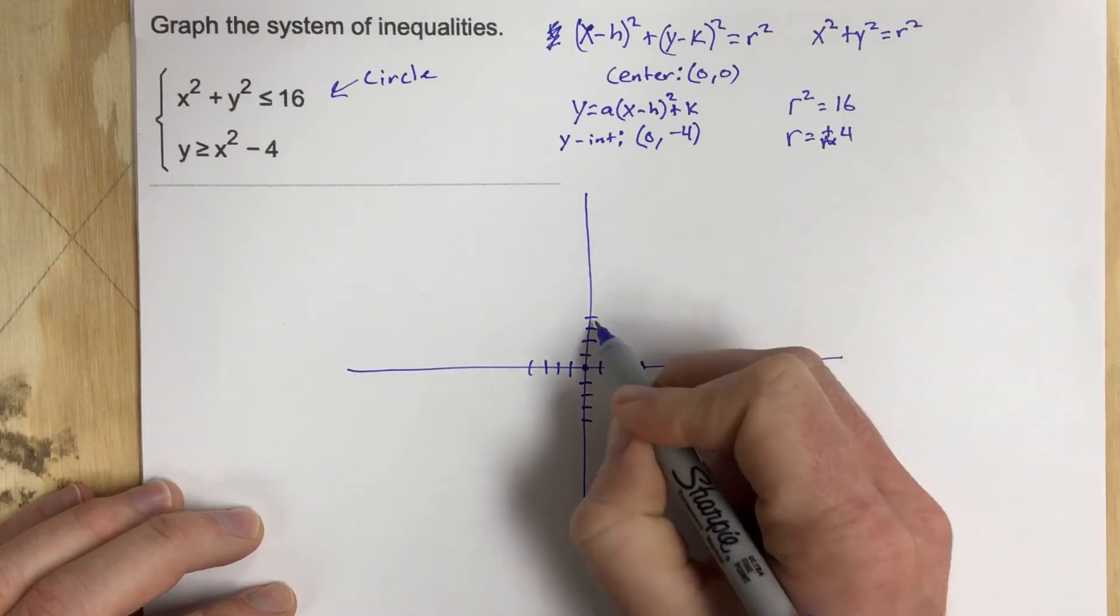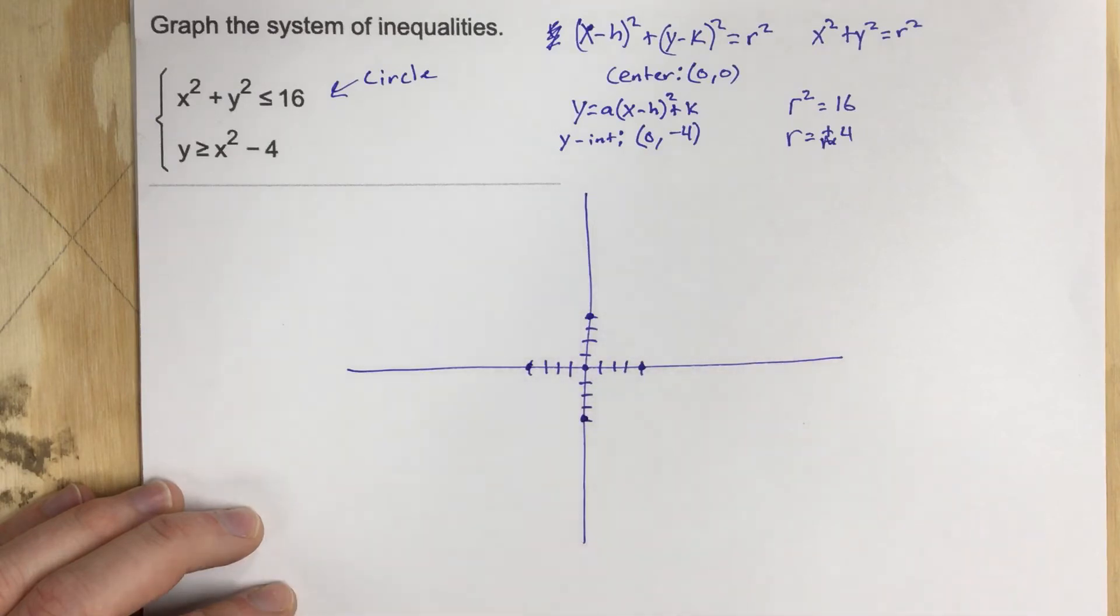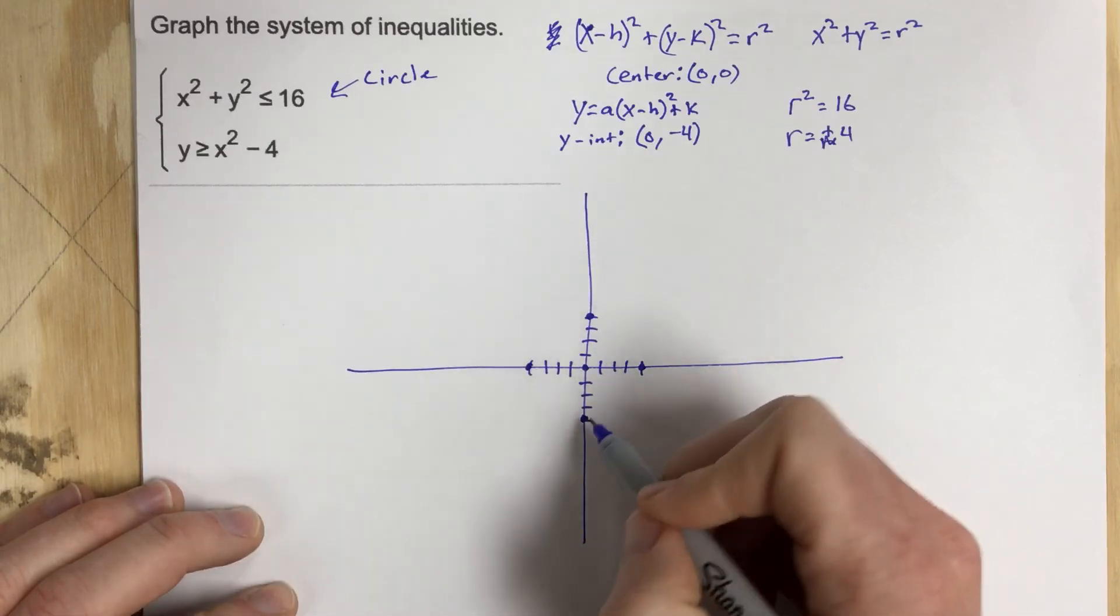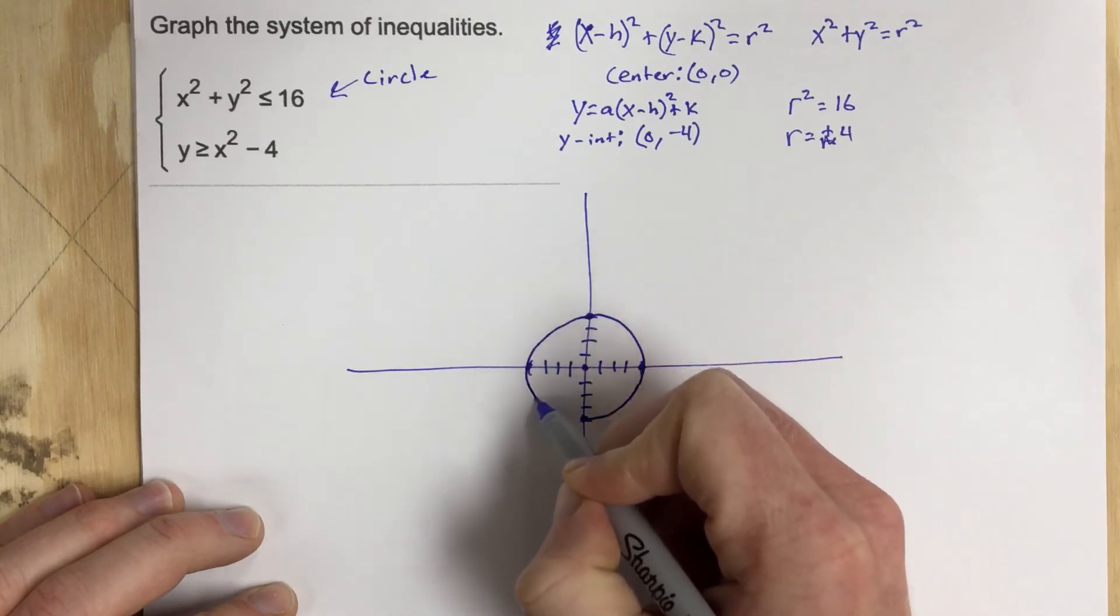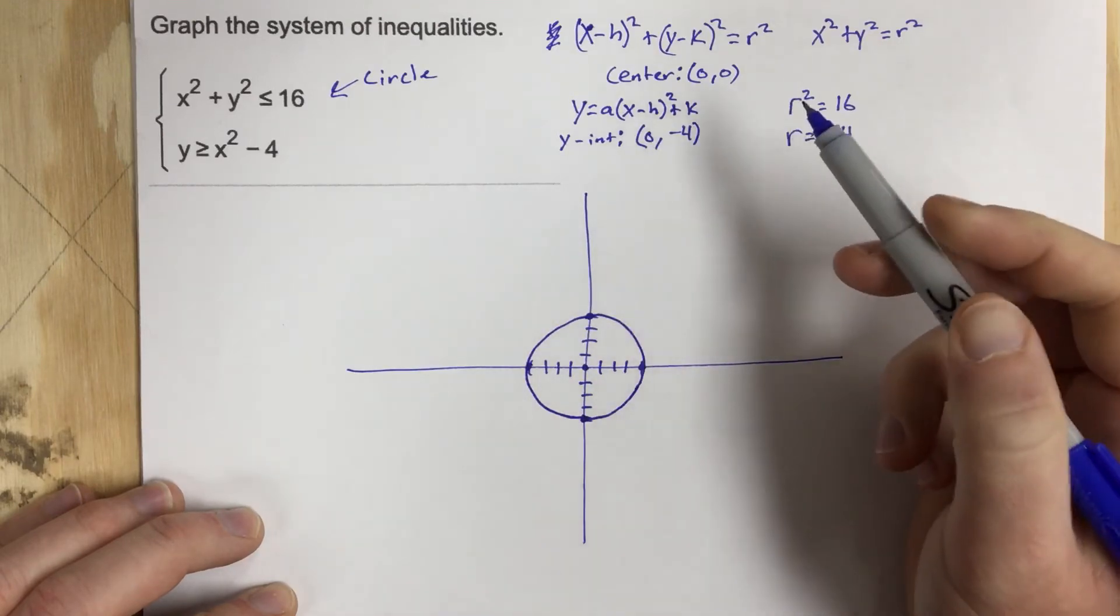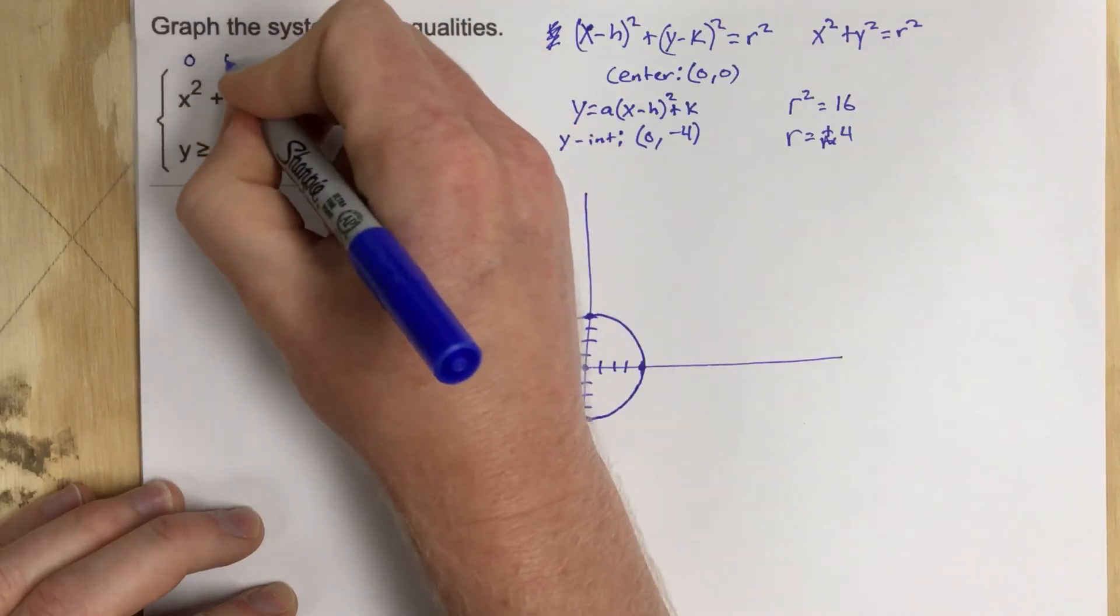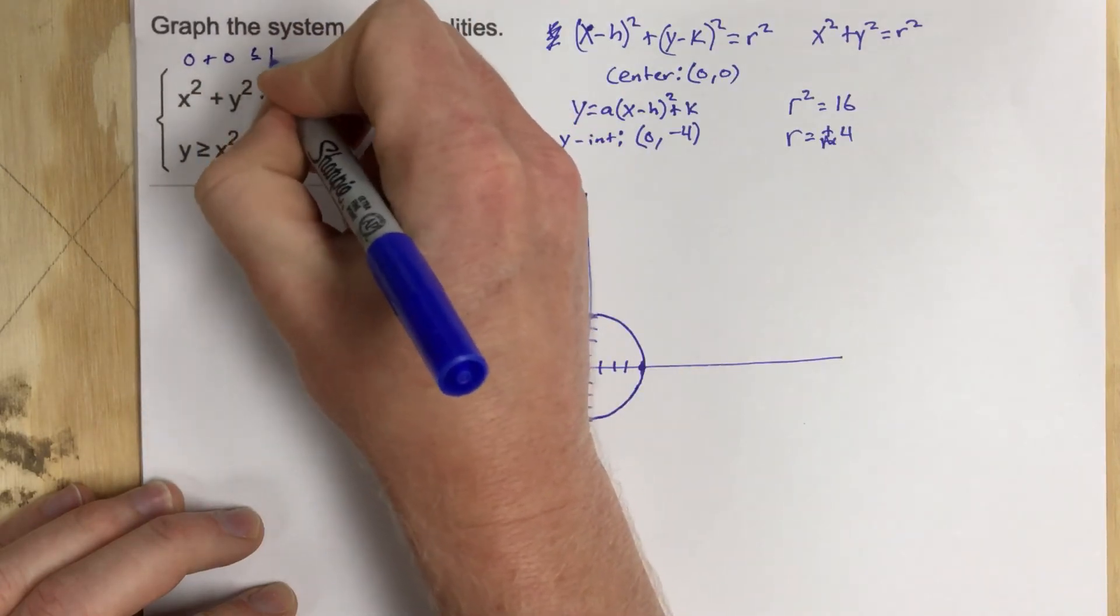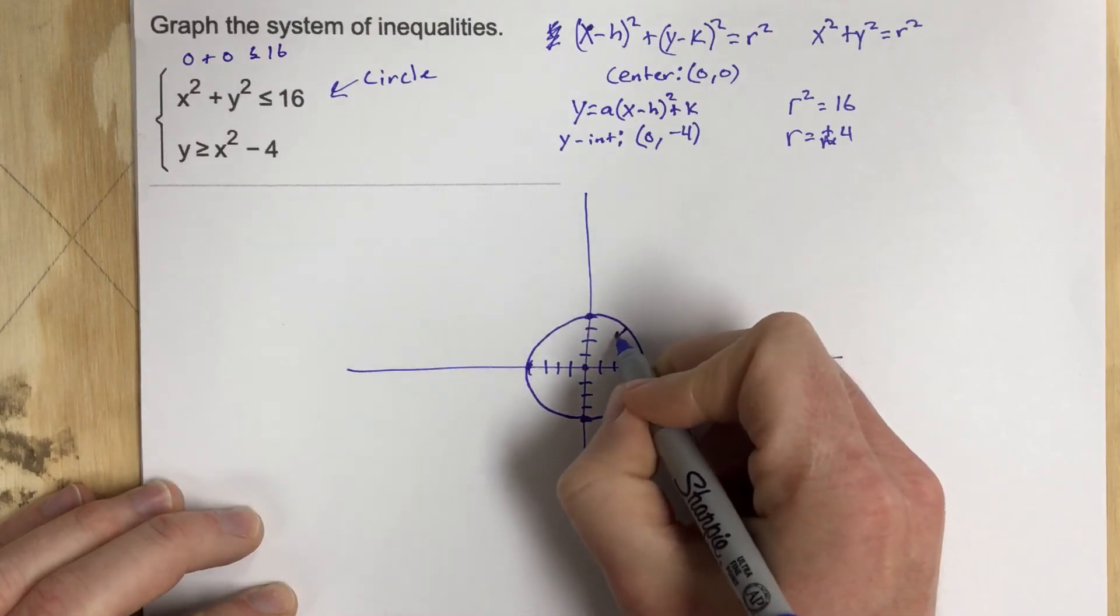So we have a radius of 4. So we're going to mark each of these points that are 4 away from the center. And then it's a bold line. So we're going to go around in a circle. That's one of my better circles. And we need to decide whether it's shaded inside or outside. So we're going to use 0, 0. So 0 plus 0 less than or equal to 16. Yeah, 0 is less than 16. So we're going to be shading this direction.